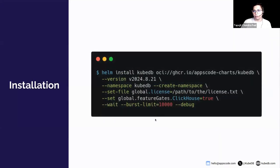To install KubeDB, you can go to our website and use the Helm command to install it. You also need to mention the feature gate for Druid when installing.